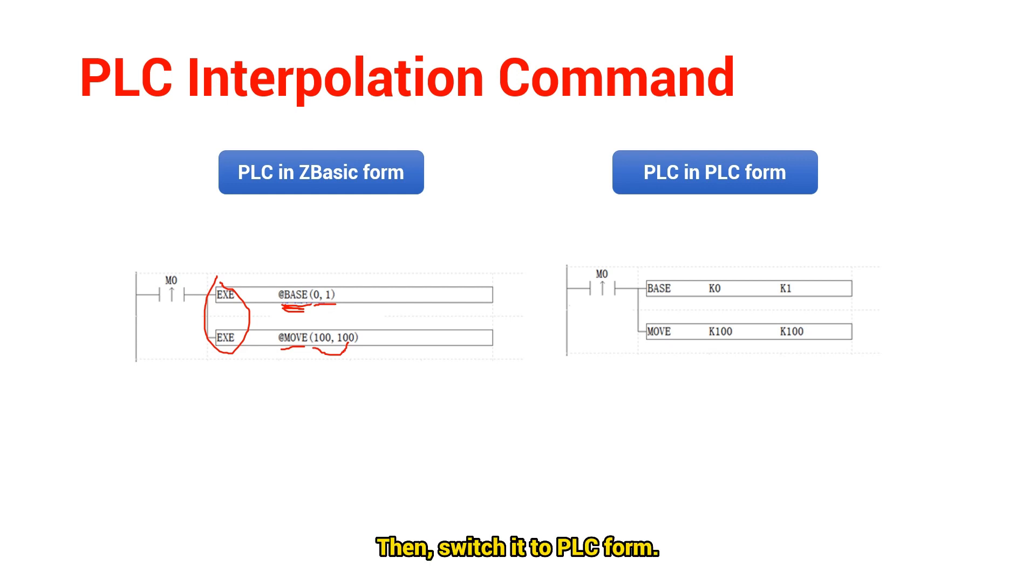Then, switch it to PLC form. Here, k0 and k1 are behind the base command. k means constant. Set k100 for move, which means it moves 100.